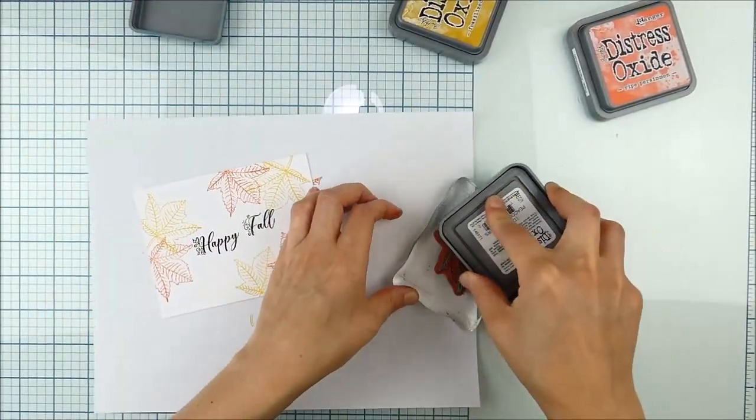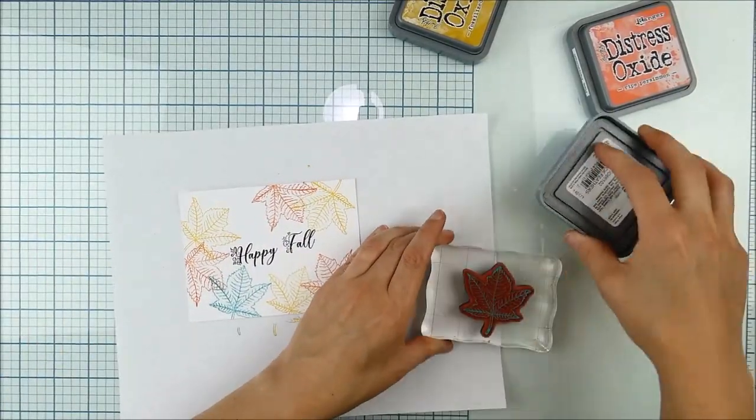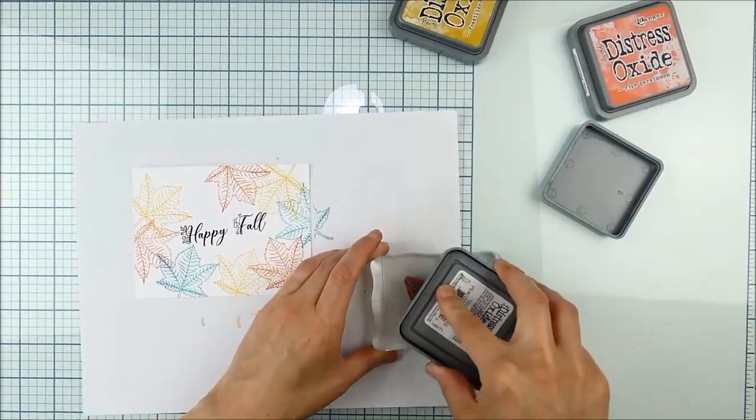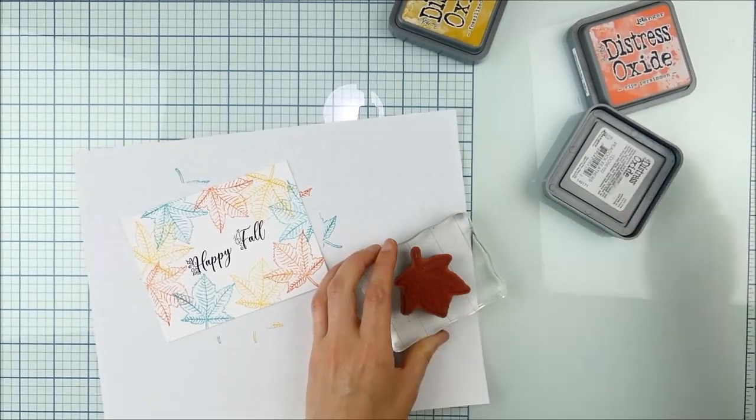But I think it's fun to bring in a non-traditional color sometimes. So that second color, I don't remember if I said, was fossilized amber and this final color is peacock feathers. There's something just about that aqua blue tone that's really fun to bring into fall color schemes.